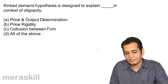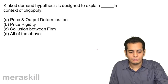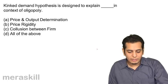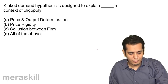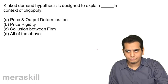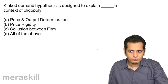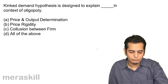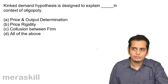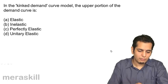Next, the King Demand Hypothesis is designed to explain dash in the context of oligopoly. A. Price and output determination, B. Price rigidity, C. Collusion between firms, D. All of the above. The answer is all of the above.